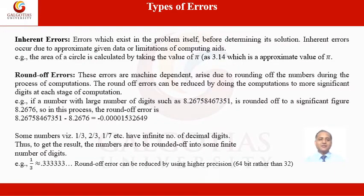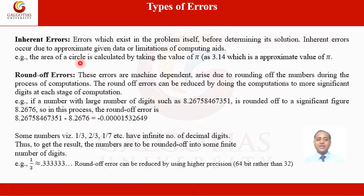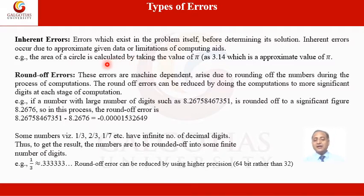Now let us look at the types of errors. The first is inherent error: errors which exist in the problem itself. For example, when calculating the area of a circle using πr², we use the approximated value of π, which is 3.14. Because we are using this approximated value, some error occurs, and such error is called inherent error.